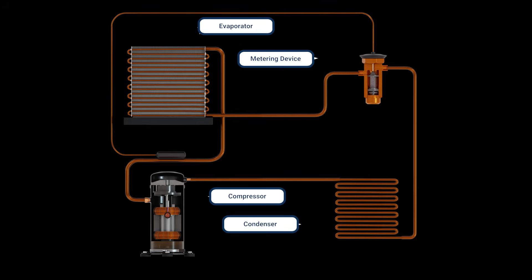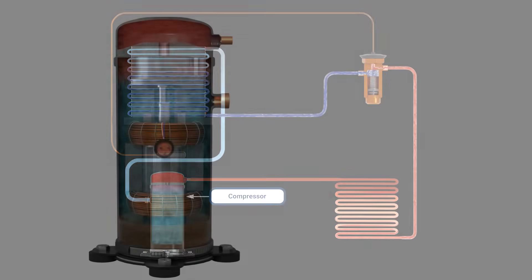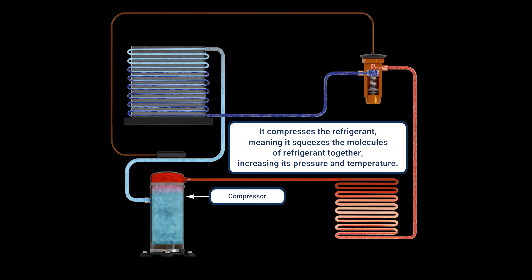Now let's look at the refrigeration cycle, starting with the compressor. It compresses the refrigerant. This means it squeezes the molecules of refrigerant together, increasing its pressure and temperature. Think of it as the heart of the system, pumping the refrigerant through the circuit, and for now, also think of it as a pressure increaser.